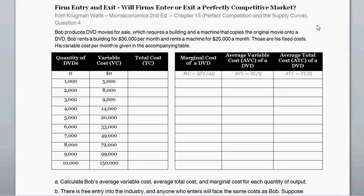Welcome. In this video we're talking about firm entry and exit with perfectly competitive markets. We're going to be given a little bit of information about this firm's cost schedule — their variable cost at different levels of production and their fixed cost — and then we'll determine at given different prices whether or not we expect firms to enter or exit the market, given that this market's perfectly competitive.